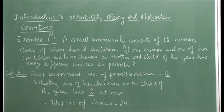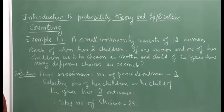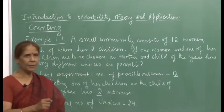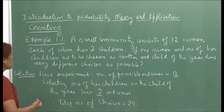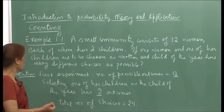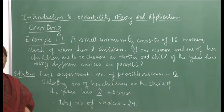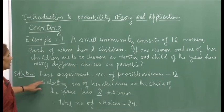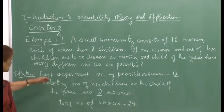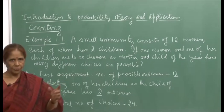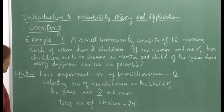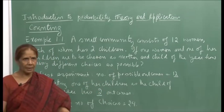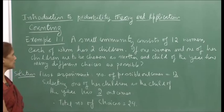Suppose there is a small community which consists of 12 women, and each of whom has two children. If one woman and one of her children — so it has to be the pair, a woman and her child — has to be chosen as mother and child of the year, how many different choices are possible? The first experiment would be choosing the mother. Out of the 12 women, we choose one as the mother of the year, so the number of possible outcomes is 12.